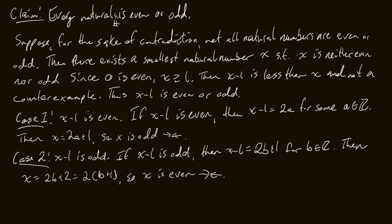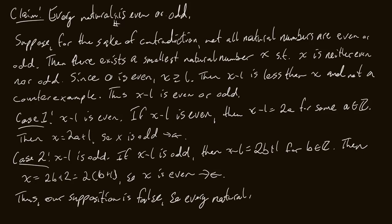Thus, our supposition is false. Our supposition was that there exists a smallest counterexample, so if our supposition is false, then there doesn't exist a smallest counterexample — meaning every natural number is even or odd. And that's the end of our proof.